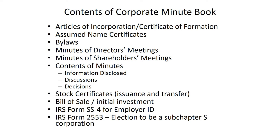If shareholders are putting up cash to purchase their stock certificates, the corporate minute book should include a record to substantiate that the initial investment occurred. It should also include a copy of the IRS form where the application for an employer ID was made, and a copy of Form 2553 if the corporation elected to be a Subchapter S corporation. A Subchapter S corporation is the simplest approach in terms of taxes — it creates a pass-through entity where the corporation is taxed like a partnership. The corporation itself does not pay taxes; it files an information return, and the shareholders pay income tax on their portion of the profits.